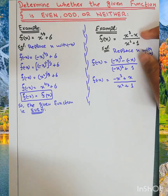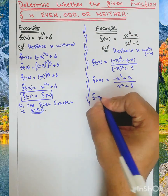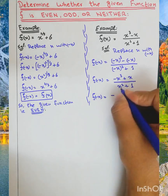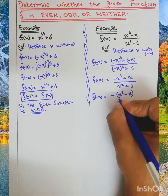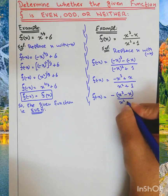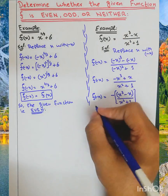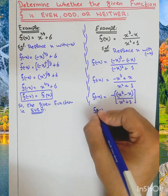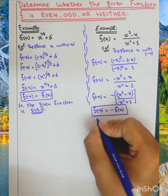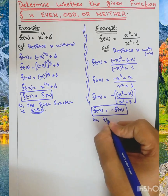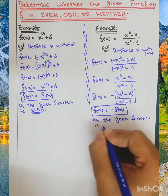This function gives us f of minus x equal to minus x cubed minus x, which is the negative of x cubed plus x. Therefore f of minus x equals minus f of x, so the given function is odd.